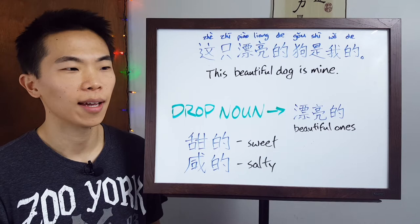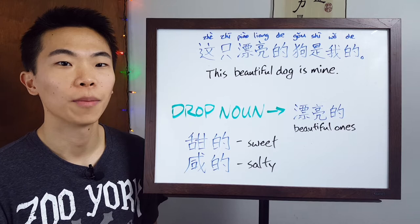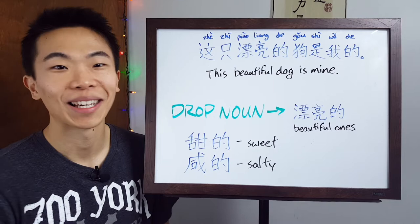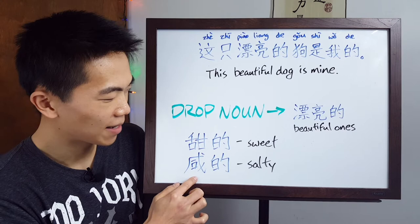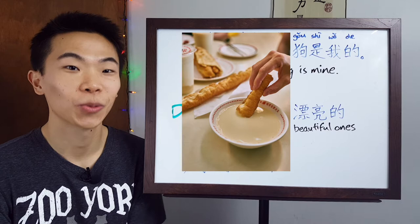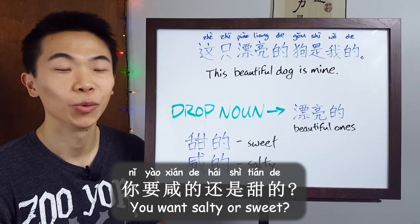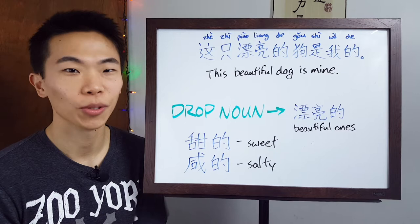I also want to cover dropping the noun, because you can do that with adjectives to discuss an ambiguous number of things that have a certain trait or quality. So 漂亮的 by itself just means 'beautiful ones' — the ones which are beautiful. Another great example related to food: 甜的 means 'sweet' and 咸的 means 'salty.' When I was younger, my parents used to love eating 豆浆, a soup made with soy milk. You have two options: the sweet one and the salty one. If you went to a restaurant and said 我要一碗豆浆 without specifying, they might say 你要咸的还是甜的? — Do you want the salty one or the sweet one?